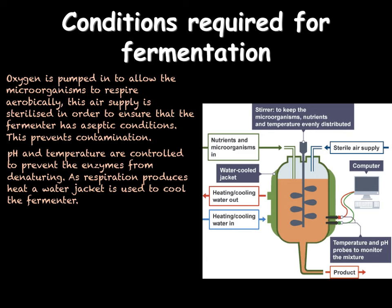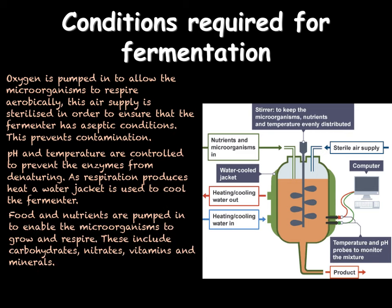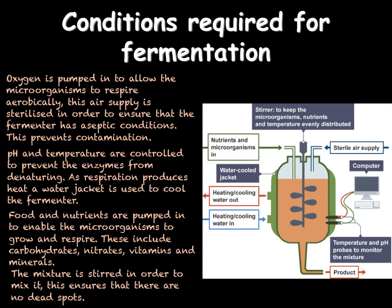We also need to provide food and nutrients — we can see the nutrients being pumped in. This ensures that the microorganisms can grow as well as respire. They need carbohydrates, in particular sugars, as an energy source, as well as nitrates to make proteins. We will also add vitamins and minerals, and more nutrients can be pumped in when these start to run out. Finally, we have stirrers, which ensure the culture is well mixed so all microorganisms get enough oxygen and nutrients and to prevent dead spots — areas where not enough nutrients and oxygen are present. The product can then be tapped off the bottom of the vat to collect it.